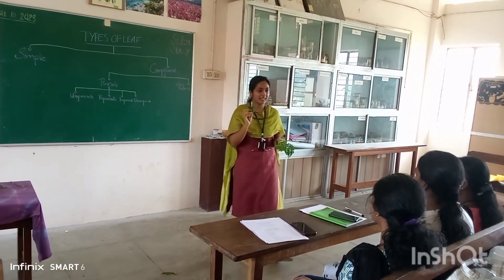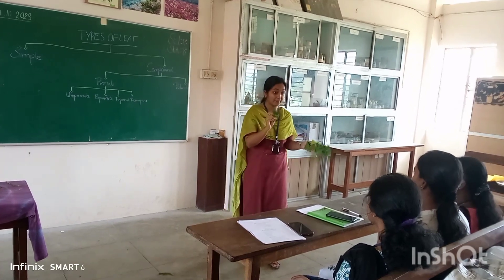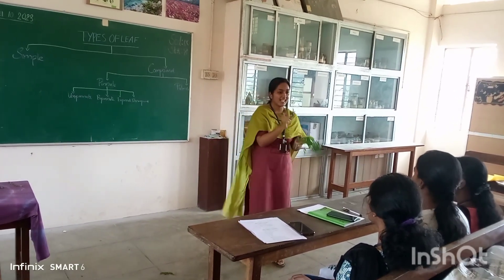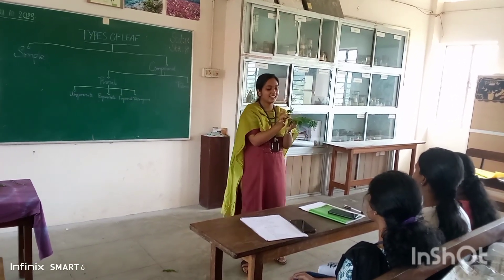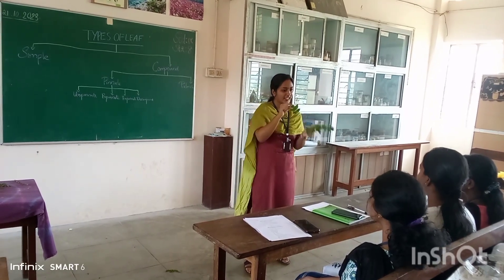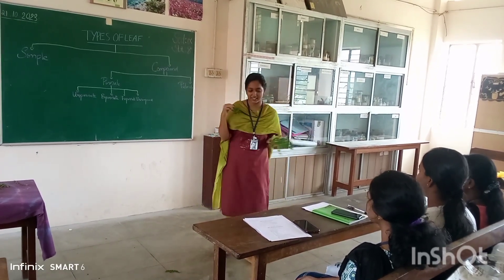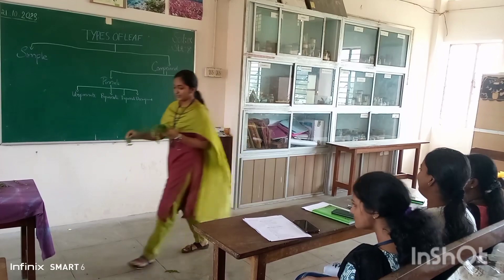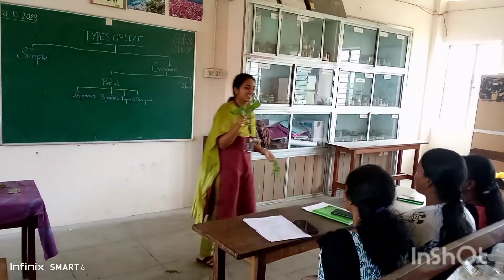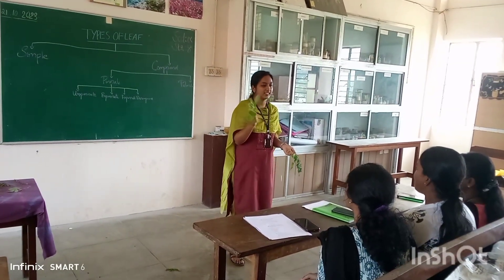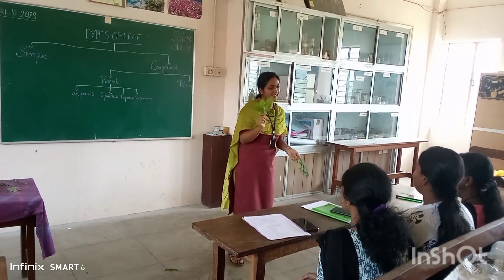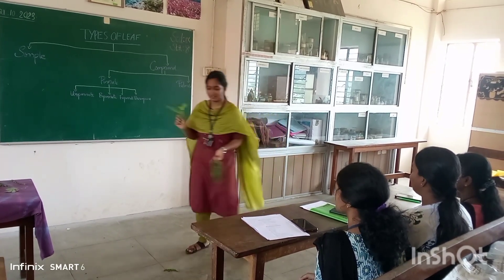It is imparipinnate. In imparipinnate, there is a rachis having an odd terminal leaflet. So it is imparipinnate. And what type of leaflet is this? Is it single or compound? Single. Yes, it's a single leaflet.